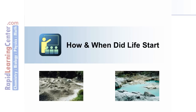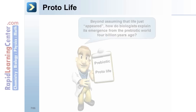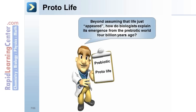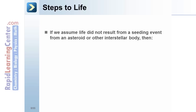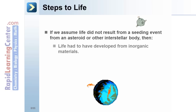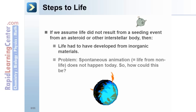How and when did life start? Protolife: beyond assuming that life just appeared, how do biologists explain its emergence from the prebiotic world 4 billion years ago? If we assume life did not result from a seeding event from an asteroid or other interstellar body, then life had to have developed from inorganic materials. The problem: spontaneous animation — that is, life from non-life — does not happen today, so how could this have happened then?